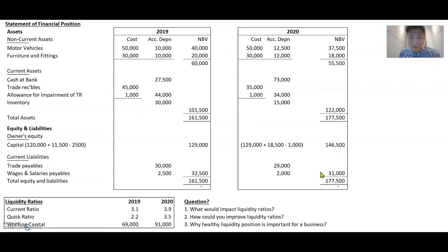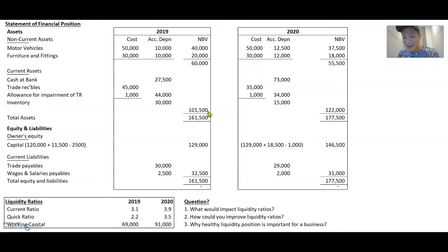A healthy liquidity position is important because if you are unable to cover your current liabilities — for example, if you only have $10,000 of current assets to cover $30,000 of payables — you would be in trouble. You would have to go to a bank for a loan, and if the bank declines, you may need to sell non-current assets quickly. If you can't, the company may have to close because they can't pay their debts, suppliers will stop supplying, and worst case, suppliers will start suing the company.